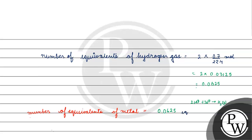Now, if we calculate the mass, mass will be equal to number of equivalents into equivalent weight of the metal. Equivalent weight of the metal is 28 gram per equivalent. So mass equals 0.0625 times 28 gram per equivalent, which gives us 1.75 gram.